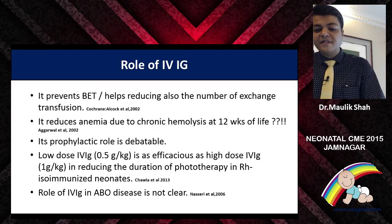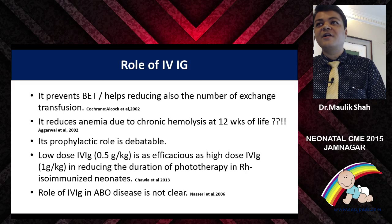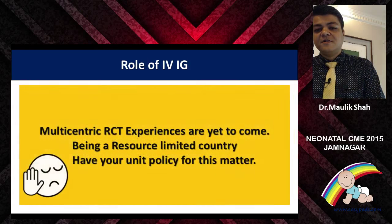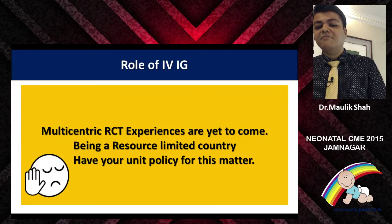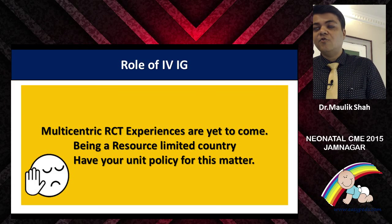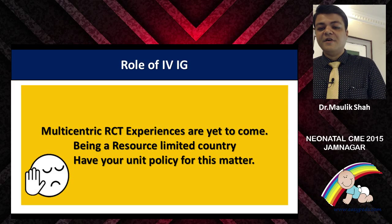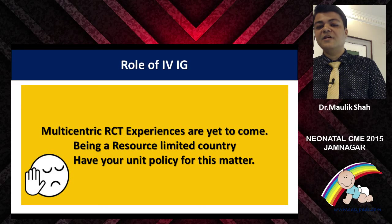The bold statement here is that there is no role of IVIG in ABO disease, and no role when you are not clear why the jaundice has occurred. Make sure that IVIG is not used indiscriminately — it is for very specific use. With a pinch of salt: multicentric RCT experiences are yet to come on this, and being a resource-limited country we should have our own unit policy for using IVIG.